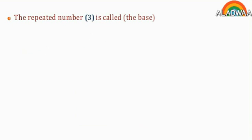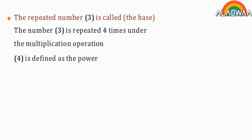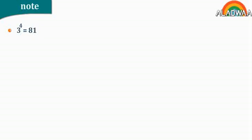The repeated number 3 is called the base. The number 3 is repeated 4 times under the multiplication operation. 4 is defined as the power. 3 to the power 4 is called 3 raised to the power of 4. Note: 3 to the power 4 equals 81. 81 is defined as the fourth power of 3.